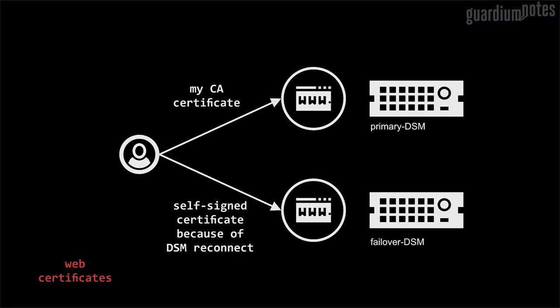I intentionally do not propose performing the same activities on DSM failover. Incidentally, this is one of the few changes that can be made on the failover server. The reason for the intentional omission is, in my opinion, an inconsistent implementation of the failover DSM reconnecting to the primary DSM in the upgrade procedure. This process causes regeneration of failover DSM certificates, including those used by the web server. The result of this approach is the need to generate CSRs and certificates for each DSM on each upgrade. Due to the occasional need to access the failover DSM portal, I suggest leaving self-signed certificates there.